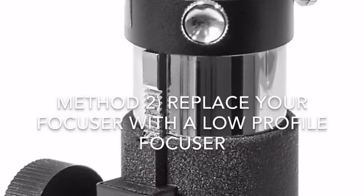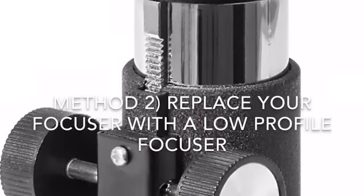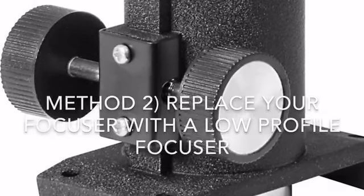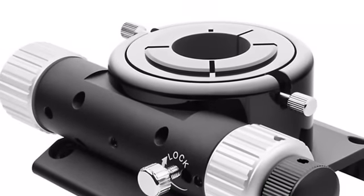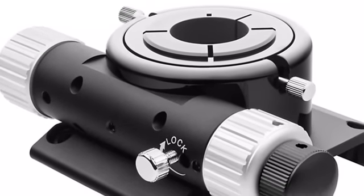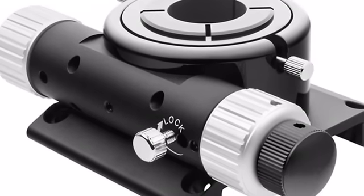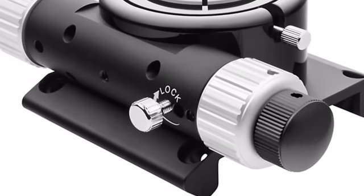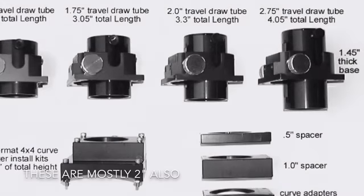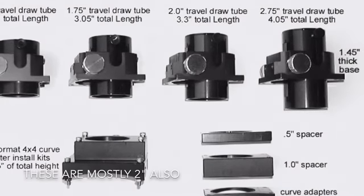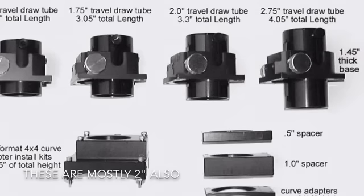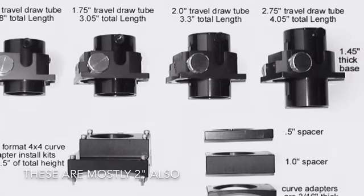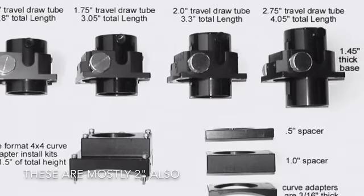That brings us to method two. In this photograph you see a standard rack and pinion focuser that's common on a lot of the budget telescopes. What you want to do is replace that with what's known as a low profile focuser. These are made specifically with astrophotography in mind and they allow enough inward focus to reach the sensor to the focal plane. But you're going to need to know some measurements and probably have to drill new holes for mounting the new spacer and that sort of thing. It can be a little engineering feat and it's also costly in most cases. Generally these are around $200 and up. So if you spent that on your telescope, it's probably not a very viable option.